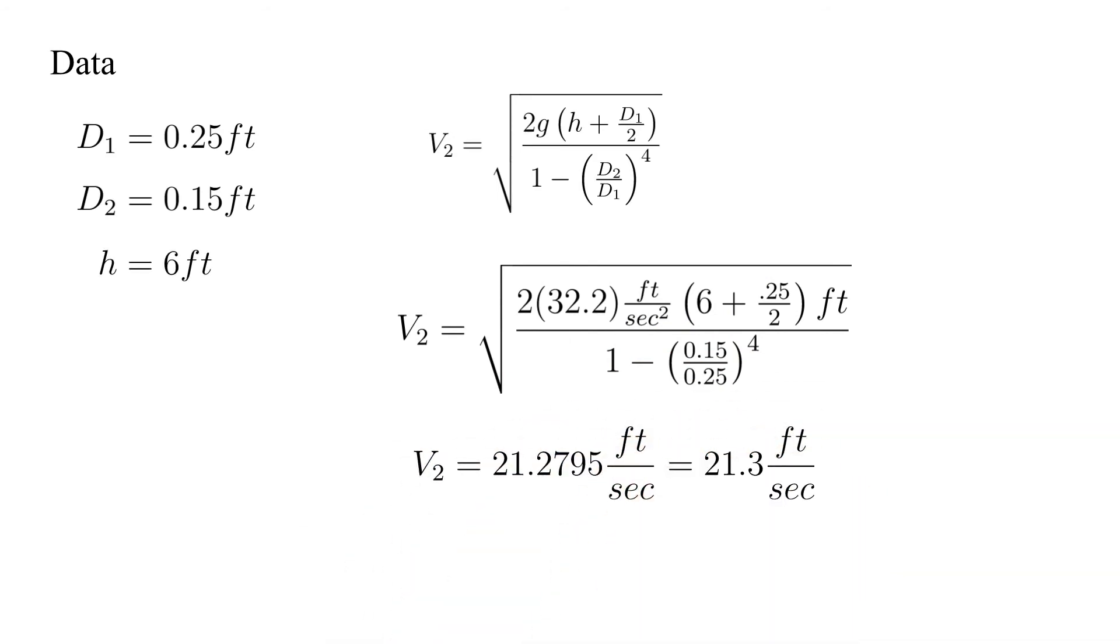However, the unknown is the volumetric flow rate Q. We know that Q is equal to velocity times flow area. Plugging in the values we get that Q is equal to 0.376 cubic feet per second.